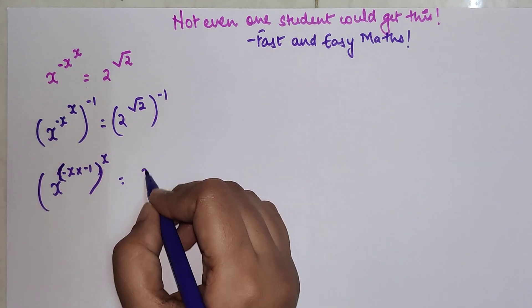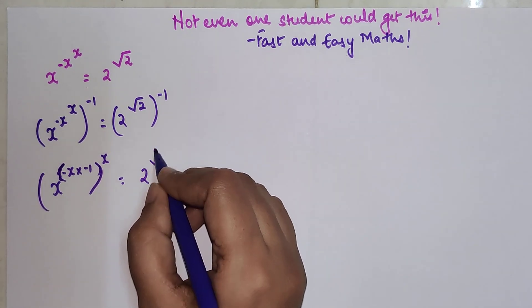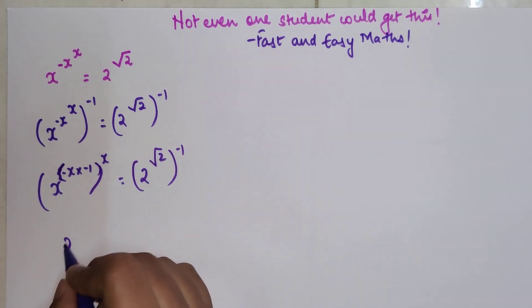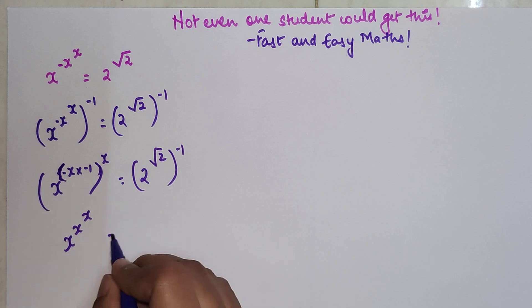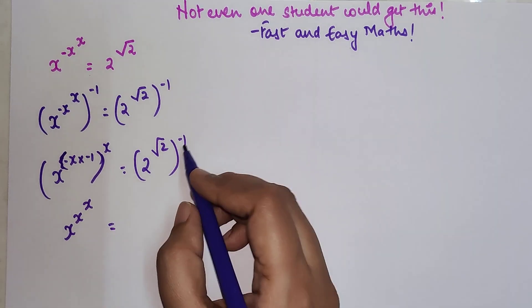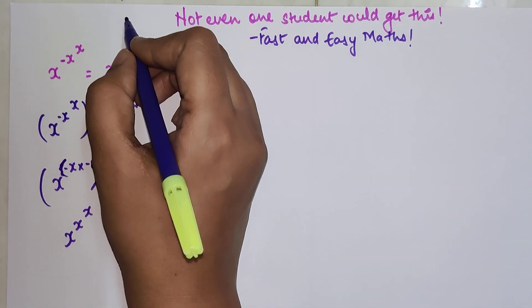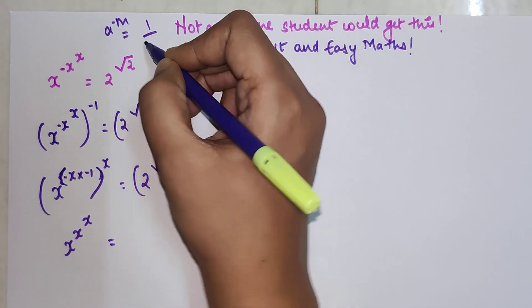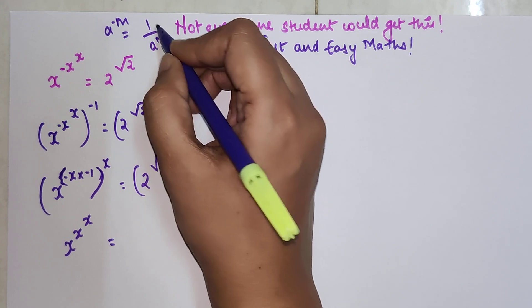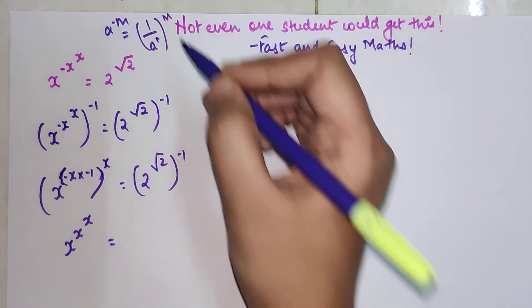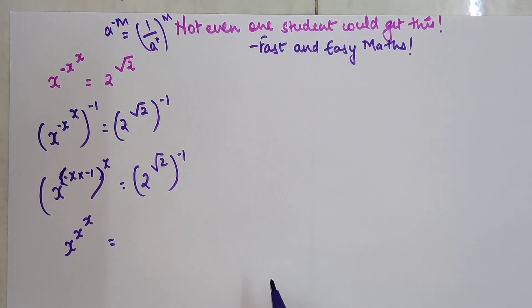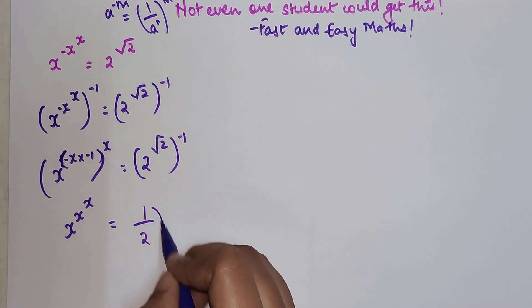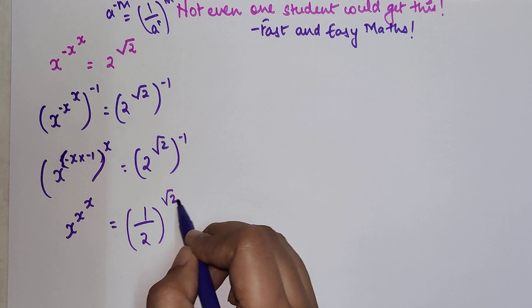So now we have 2 raised to root 2. This now becomes x raised to x raised to x. Now any number raised to a negative power can be written as 1 upon that number raised to the positive power.